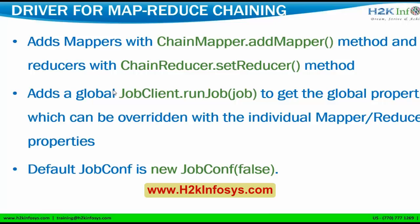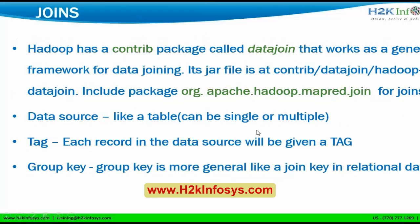You can add any number of mappers using ChainMapper.addMapper and any number of reducers using ChainReducer.setReducer. The global JobClient.runJob gets the global properties, which can be overridden by individual mapper or reducer job properties. The default job configuration is new JobConf(false). Local properties take precedence first, then global.